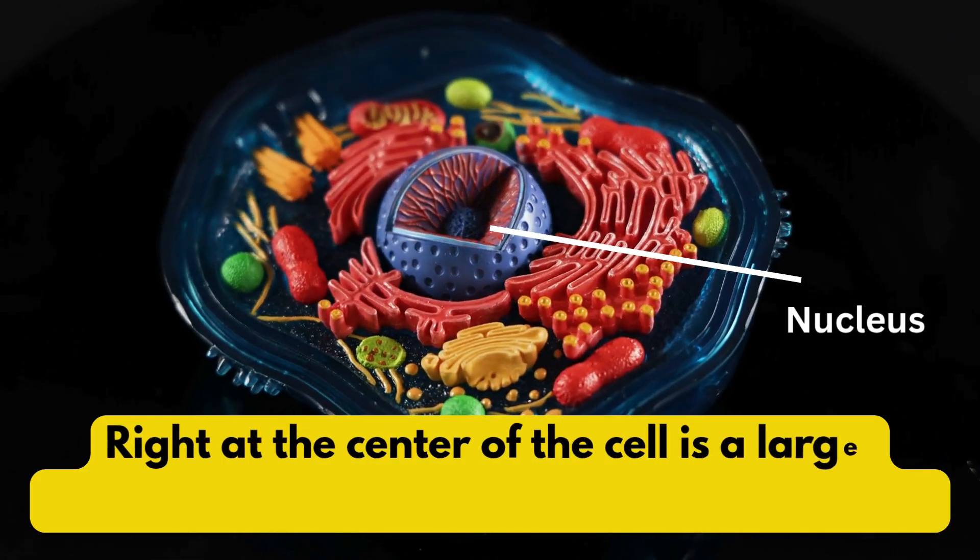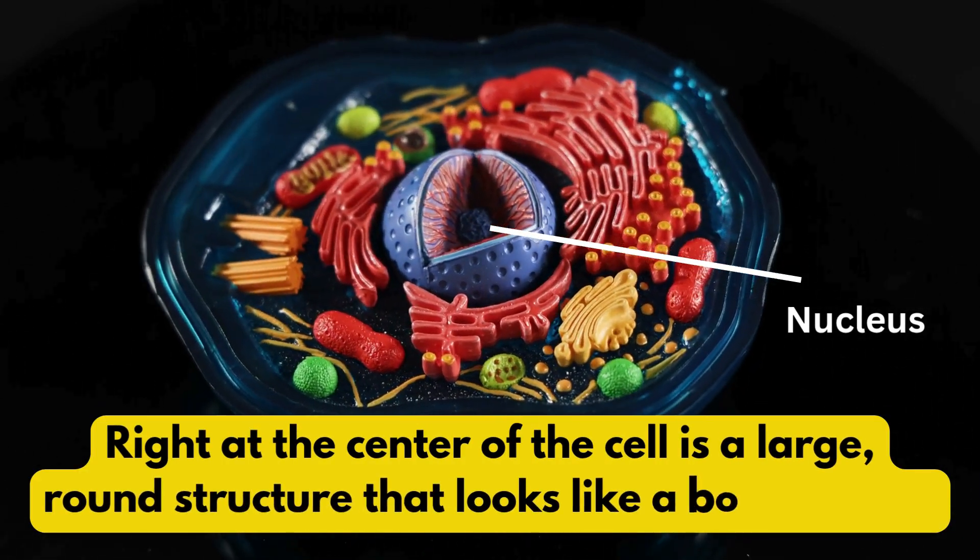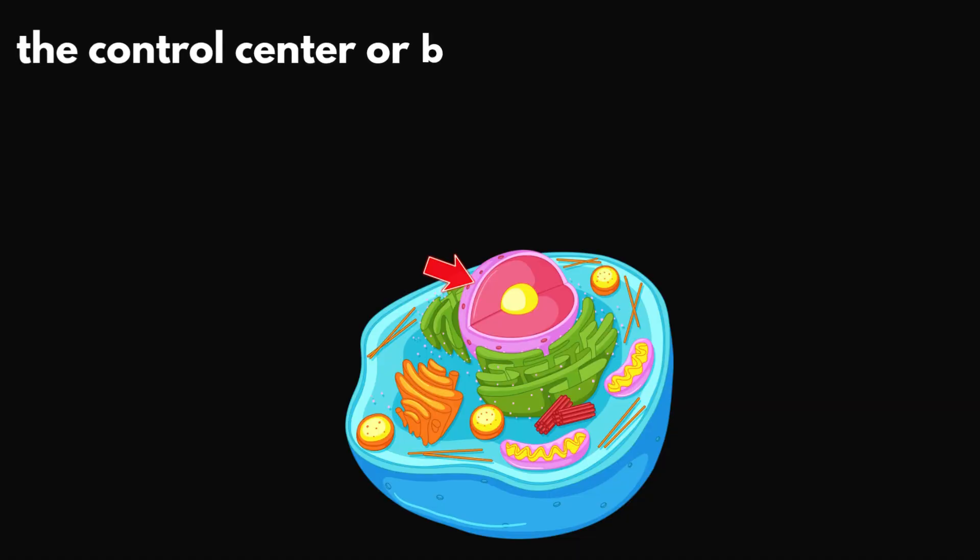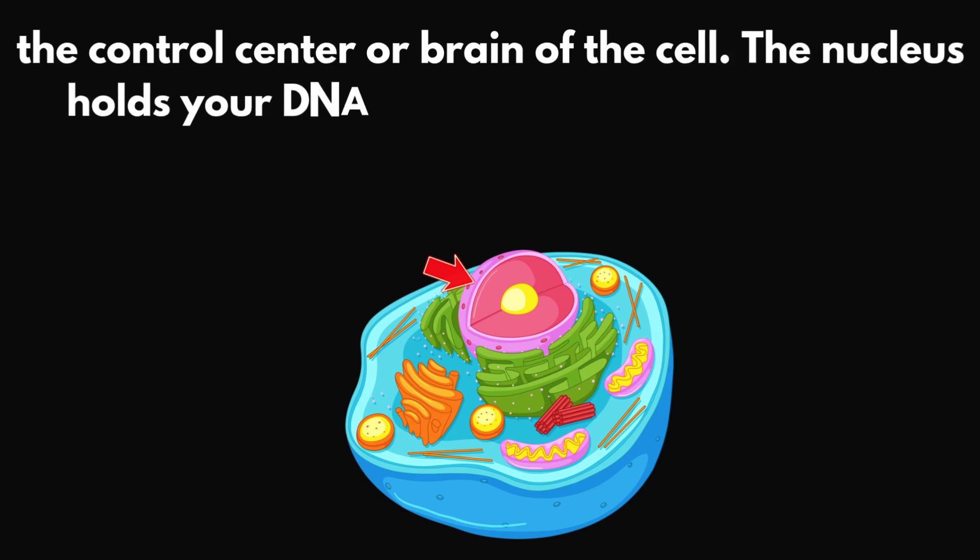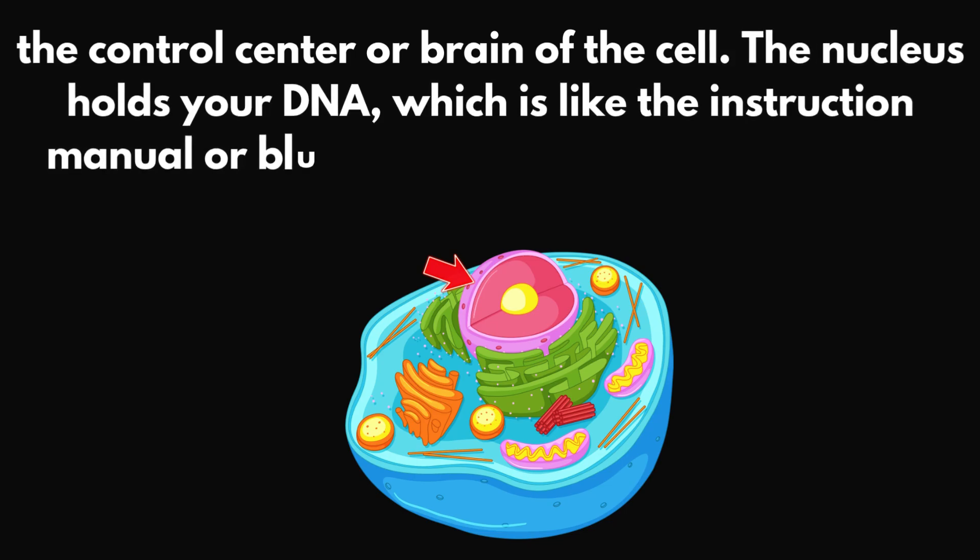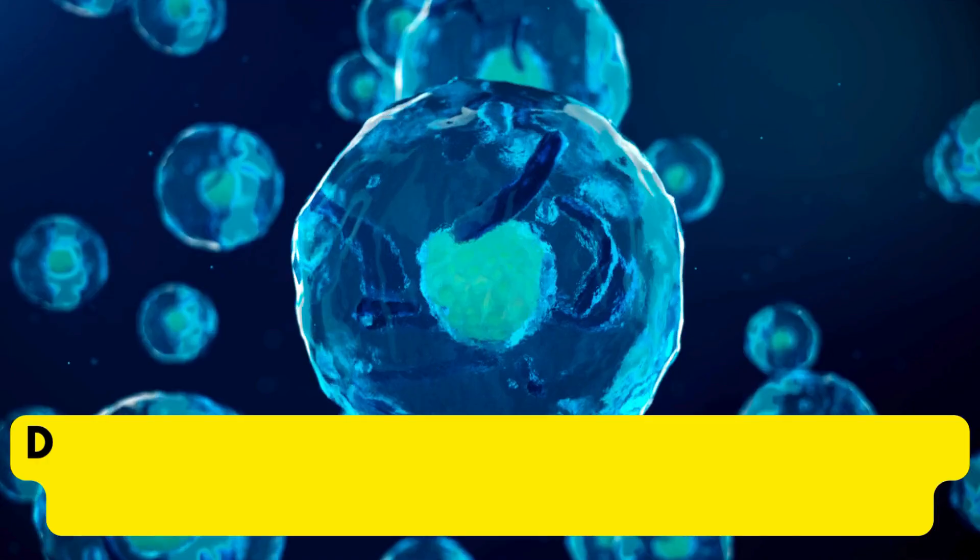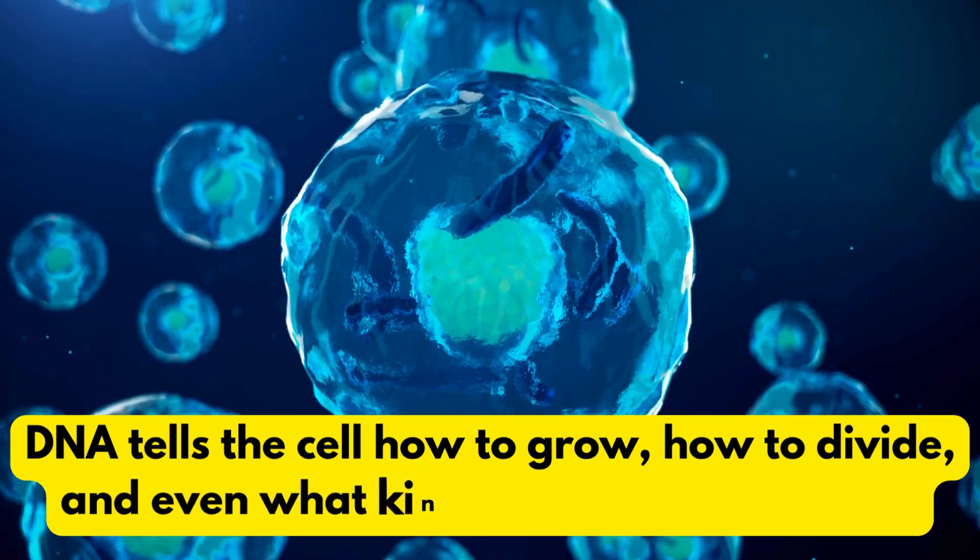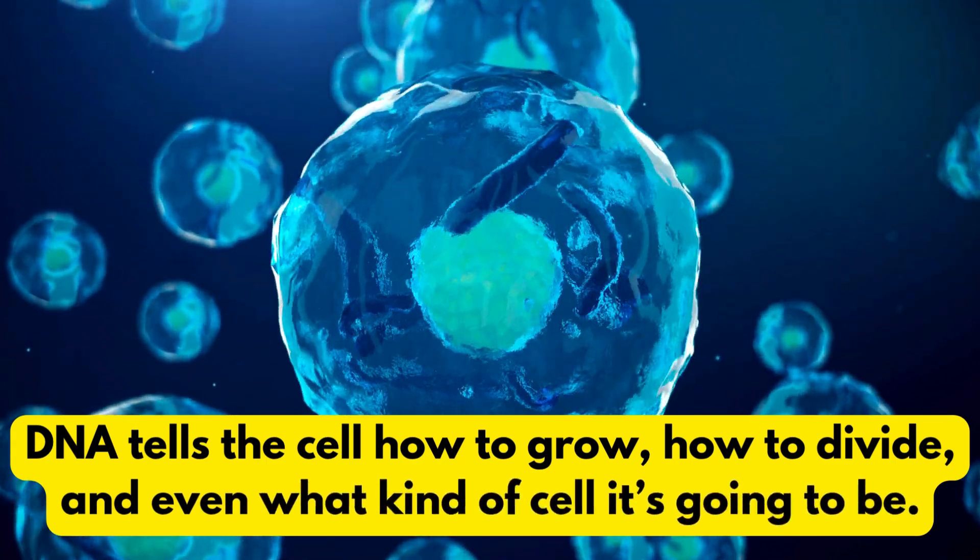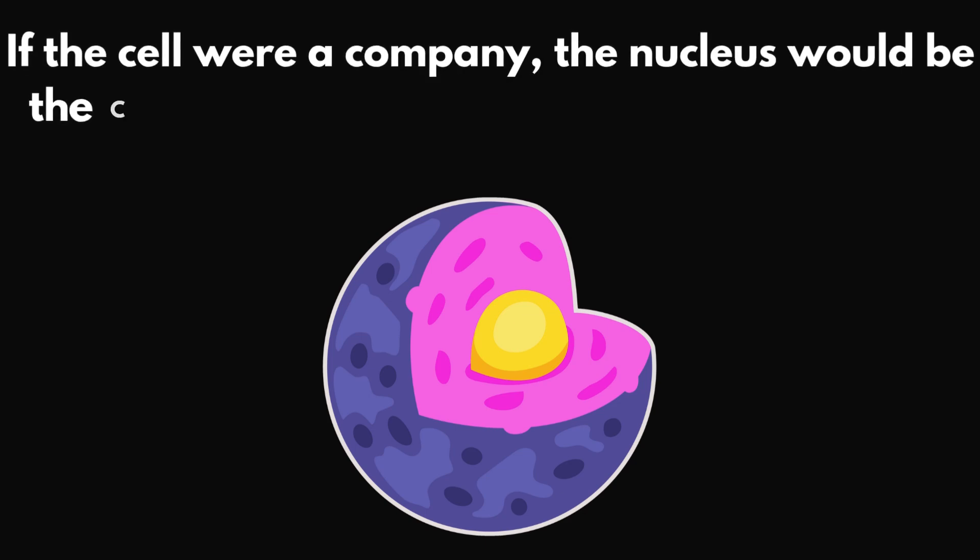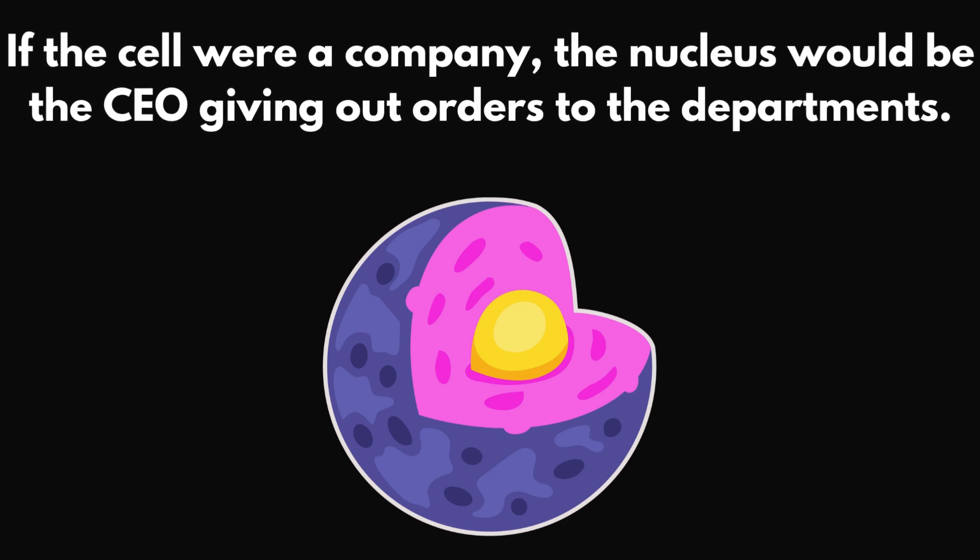Right at the center of the cell is a large, round structure that looks like a boss's office. That's the nucleus, the control center or brain of the cell. The nucleus holds your DNA, which is like the instruction manual or blueprint for everything your body does. DNA tells the cell how to grow, how to divide and even what kind of cell it's going to be. If the cell were a company, the nucleus would be the CEO giving out orders to the departments.